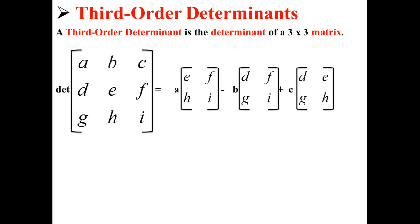Here, on the left, we have a 3 by 3 matrix. It consists of the elements A, B, C, D, E, F, G, H, I. And this is how you find its third-order determinant.